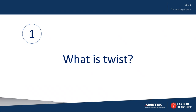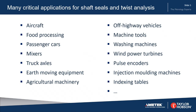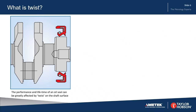So what is twist? Here are some of the many critical applications requiring twist analysis on shaft seals. In some cases we're trying to stop oil from leaking out of a system. And in other cases we're trying to stop the lubricant itself from being contaminated by dirt or dust, for example. This is an example of a crankshaft where we have a seal on this bearing, and on this side we have oil, and on this side we have air. And what we're concerned with is the lay, the features, the twist on this surface.